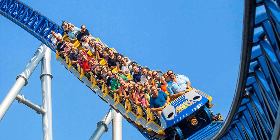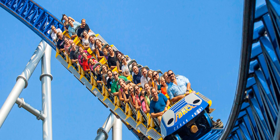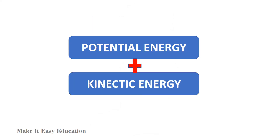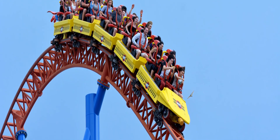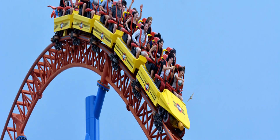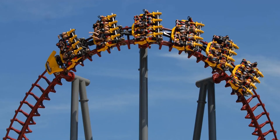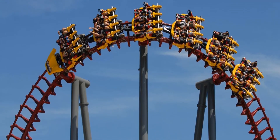Do you know how energy makes this happen? This happens because of potential energy and kinetic energy. As the roller coaster cars climb to the top, they gain potential energy. The higher the cars go, the more potential energy they have.